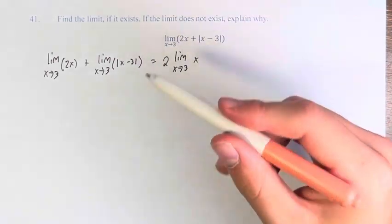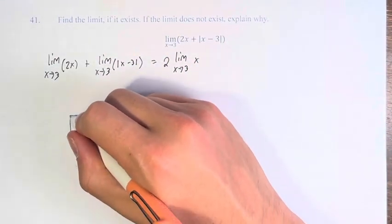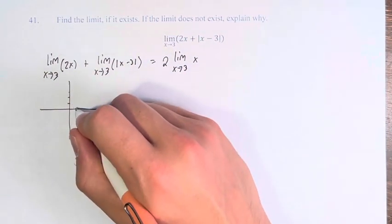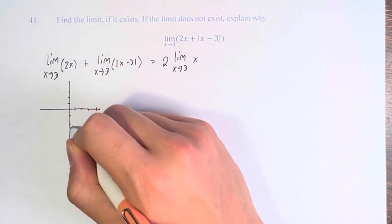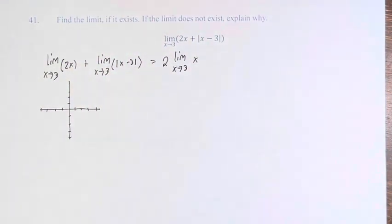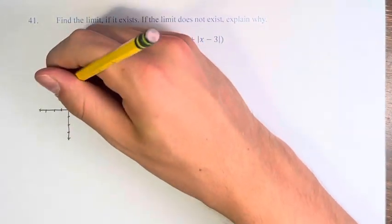So the first step is let's just graph this function to get an understanding of it. We know the graph of the absolute value function, the standard absolute value function, absolute value of x, just looks like this.